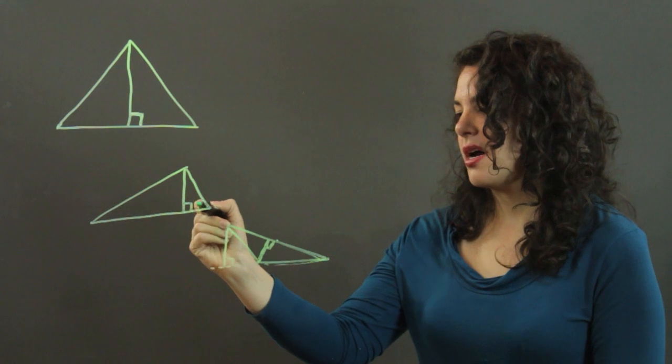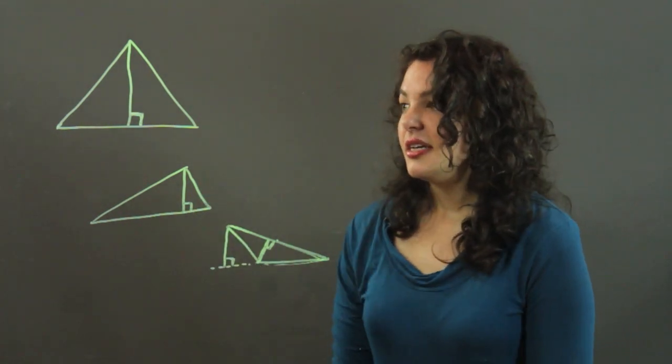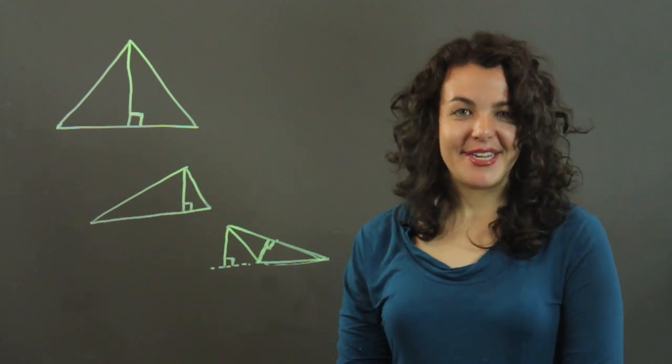This little square box shows that it's perpendicular. That's the notation. So there you have it. My name's Julia. Thank you.